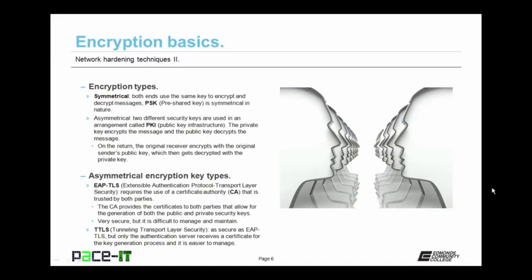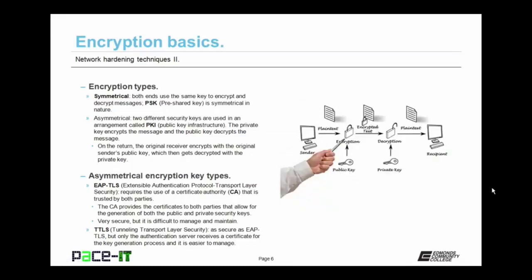Let's talk about asymmetrical encryption keys. There are two main types. There is the EAPTLS type key — Extensible Authentication Protocol Transport Layer Security. It requires the use of a Certificate Authority, or CA, that is trusted by both parties. The CA provides the certificates to both parties that allow for the generation of both the public and private security keys. It's very secure, but also difficult to manage and maintain. Then there's TTLS, Tunneling Transport Layer Security. It's as secure as EAPTLS, but only the authentication server receives a certificate for the key generation process, and it's easier to manage and maintain than EAPTLS.